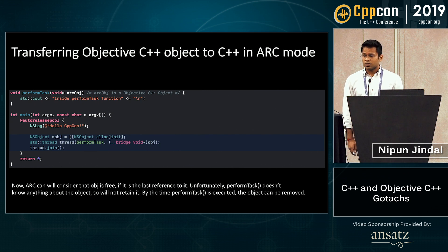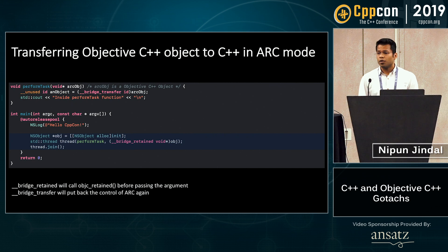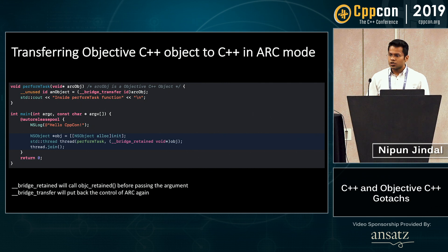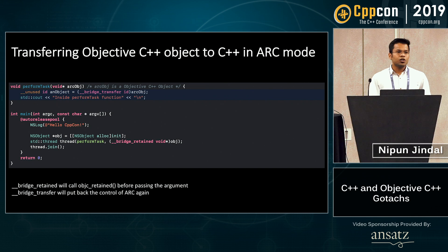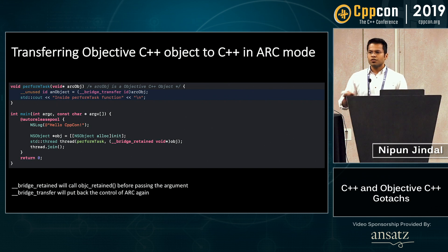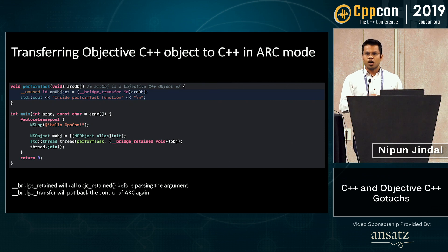So how do I solve this? Instead of __bridge, I have to call __bridge_retained, so that when this argument is pushed onto the stack, it actually calls Objective-C retain first, which increments the reference count by one. Then when you go into perform_task, you call __bridge_transfer, which brings it back to the ARC domain so that once you go out of scope, you can actually release this object. This is how you move your Objective-C++ object to C++ in the ARC domain.